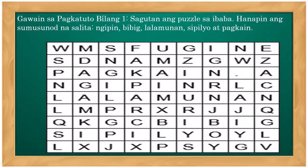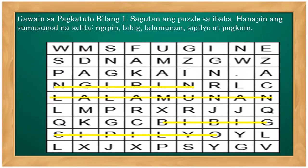Subukan naman natin. Gawain bilang isa: sagutan ang pasal sa iba ba — hanapin ang sumusunod na salita: ngipin, bibig, lalamunan, sipilyo, at pagkain. Tingnan natin kung magkatulad ang sagot natin. Una: ngipin — madali lang mahanap. Sunod: bibig, lalamunan, sipilyo, pagkain. Kung katulad ang sagot mo sa sagot natin, napakahusay mo!